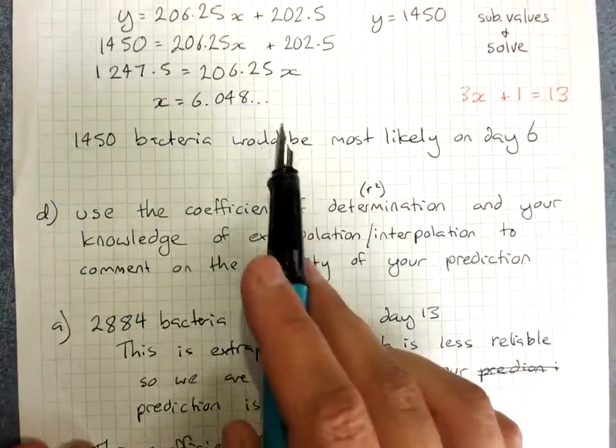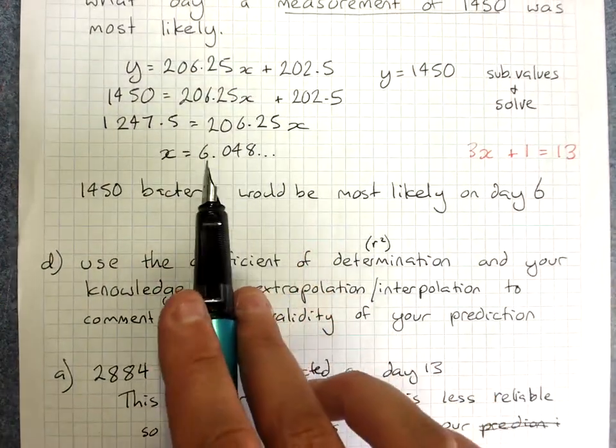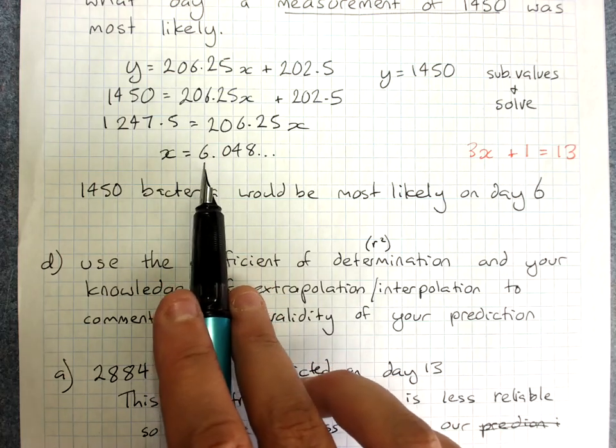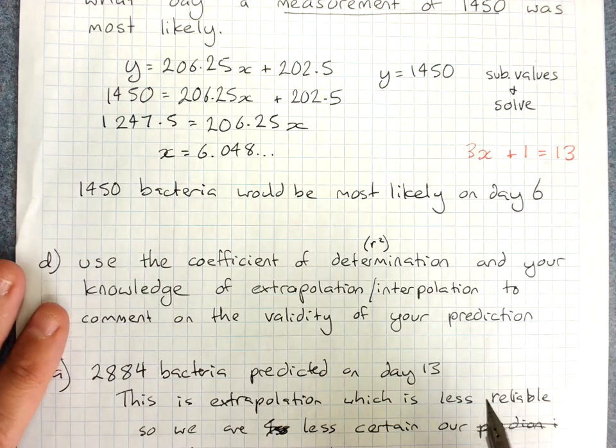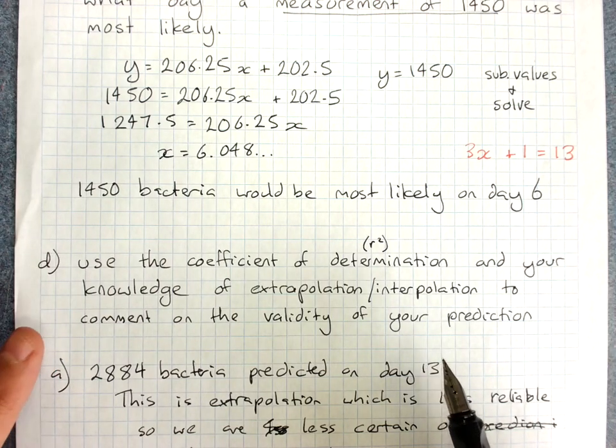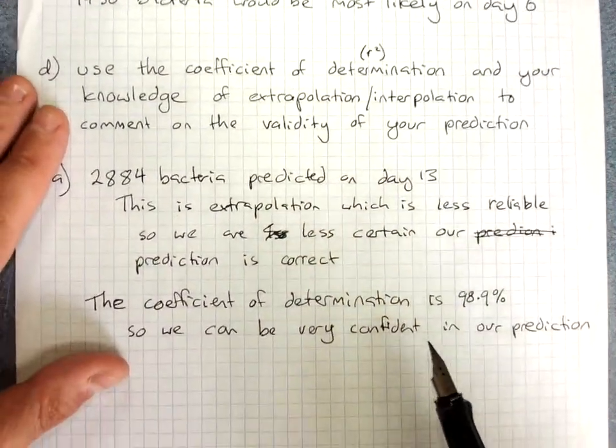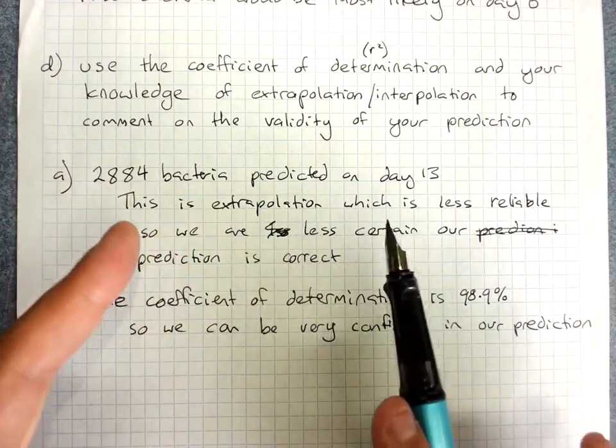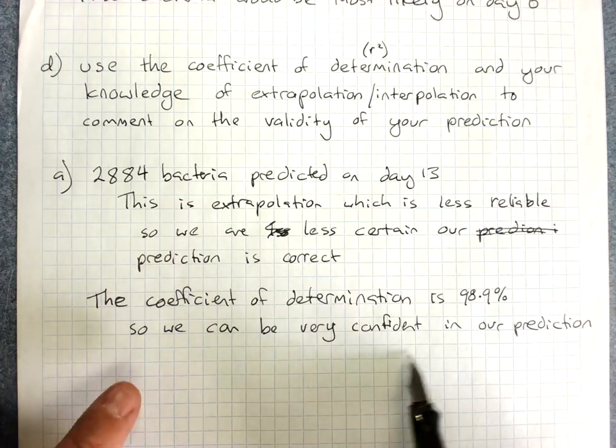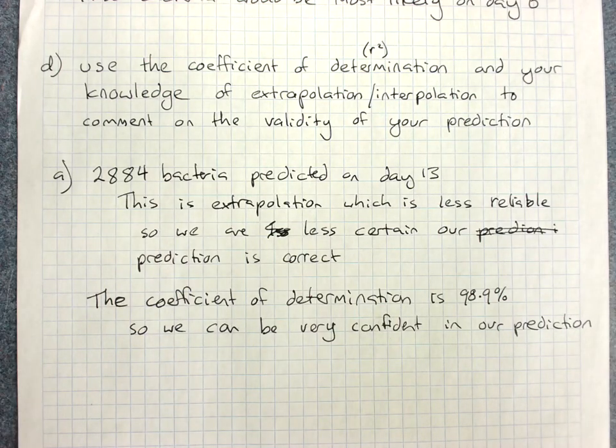If we're talking about the validity here, we're within our data at day 6, so we would say that this is interpolation and thus more likely to be a prediction that we're confident in. So the extrapolation does depend how far outside your data is, and you definitely look at the coefficient of determination as well.